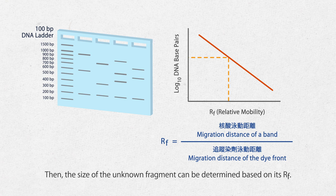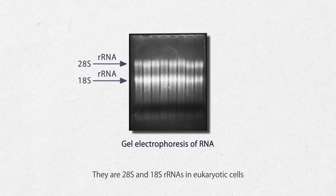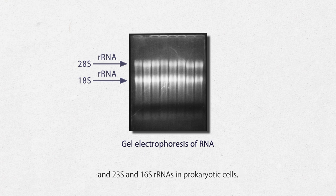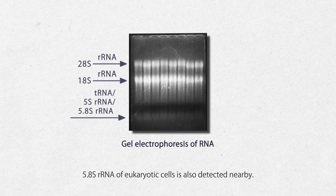A typical electrophoresis result of cellular RNA will have two obvious rRNA bands. There are 28S and 18S rRNAs in eukaryotic cells and 23S and 16S rRNAs in prokaryotic cells. tRNA and 5S rRNA are detected at the bottom of the gel only when they are abundant. 5.8S rRNA of eukaryotic cells is also detected nearby.